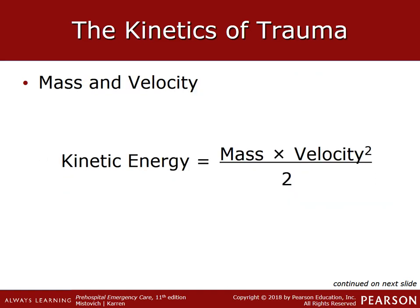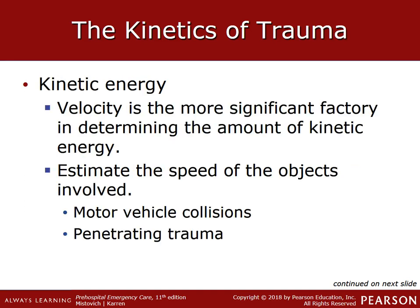So mass and velocity: kinetic energy is equal to mass times velocity squared divided by 2. The formula illustrates that if the mass of a moving object is doubled, its kinetic energy is also doubled. You would be injured twice as badly if you were hit by a 2-pound rock as if you were hit by a 1-pound rock thrown at the same speed.